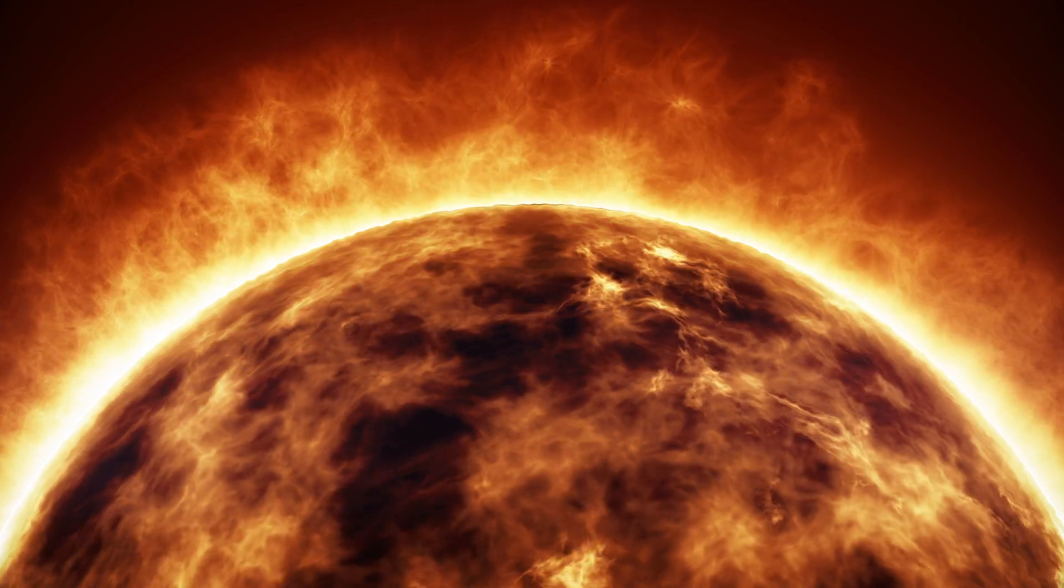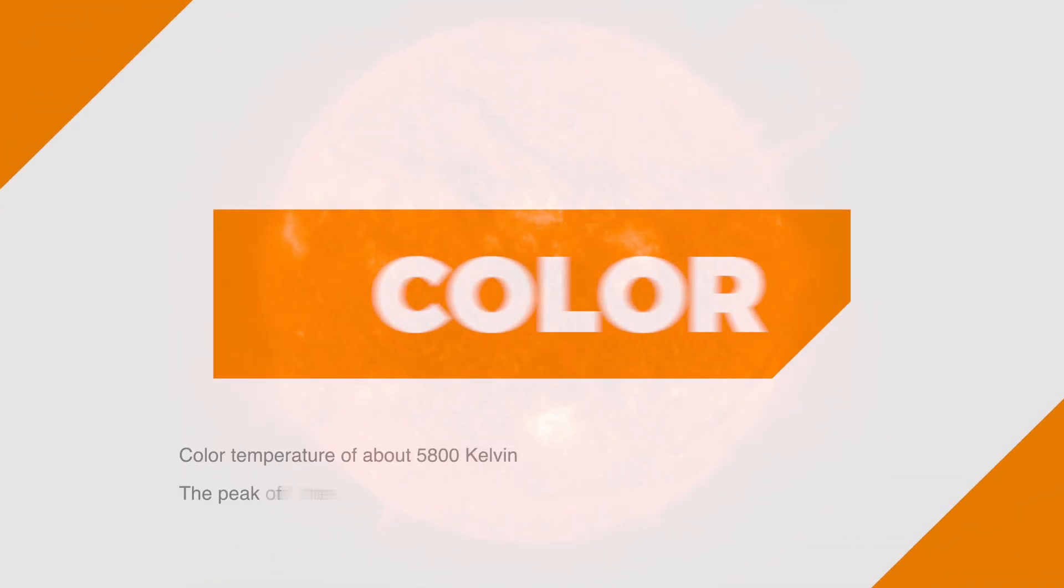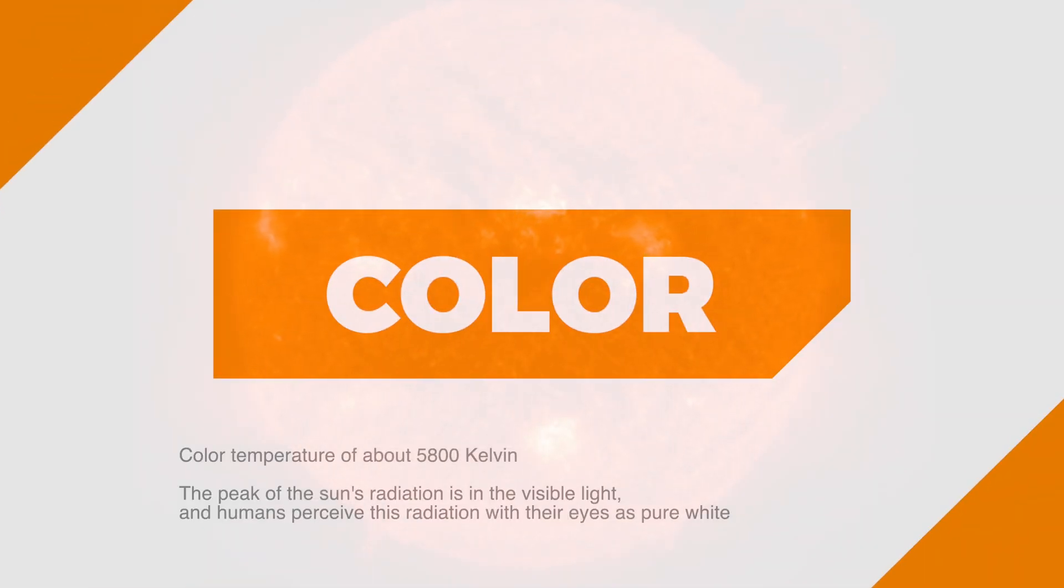The solar wind is also an important factor in the study of space and the solar system. The Sun shines with a color temperature of about 5,800 Kelvin. The peak of the Sun's radiation is in the visible light, and humans perceive this radiation with their eyes as pure white.